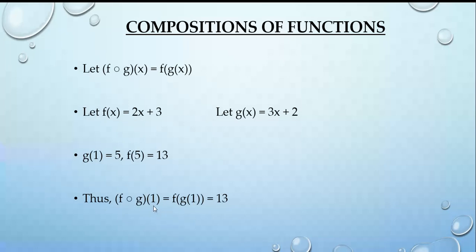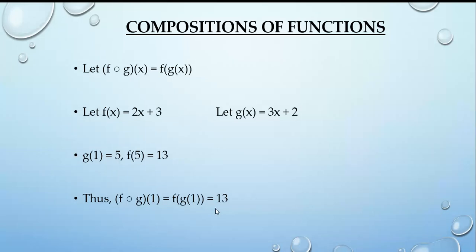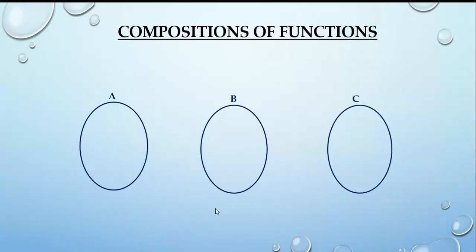So f composition g at x = 1 means first we calculate g(1) = 5, then f(5) = 13. Therefore, the value of f composition g of 1 is 13.